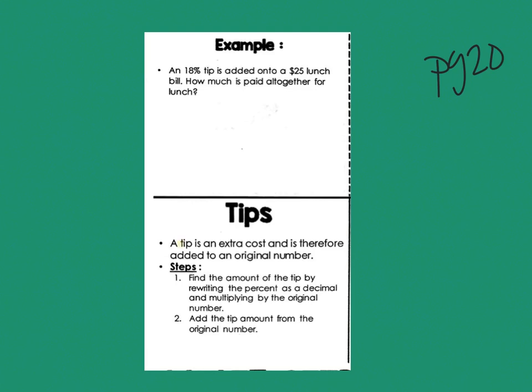I'm going to highlight a couple things. A tip is an extra cost, therefore we're going to add it to the original number. The steps in order to do this: first, we're going to rewrite the percent as a decimal, then multiply that decimal with the original number, and last we will add the tip to the original number.